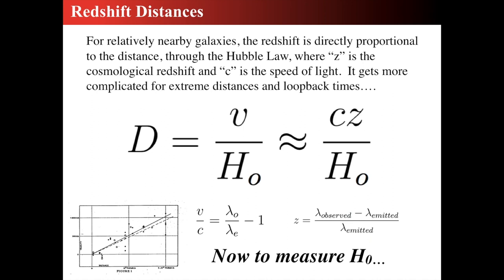For nearby galaxies the redshift is proportional to the distance — that does not work for really distant galaxies. For nearby galaxies, the distance d is approximately equal to the speed of light times the redshift z divided by the Hubble constant. Measuring the Hubble constant is the real trick — that's what Hubble did in 1929; the slope of that velocity-distance curve is the measurement.